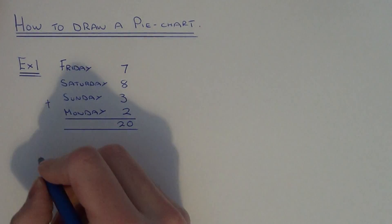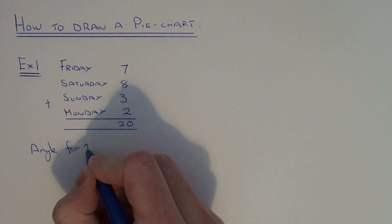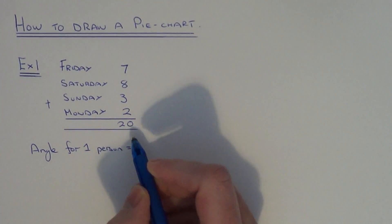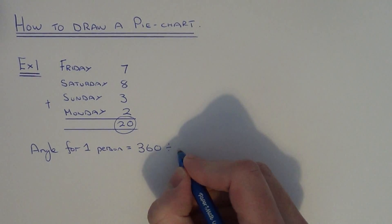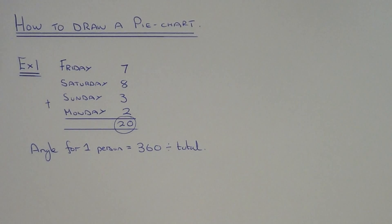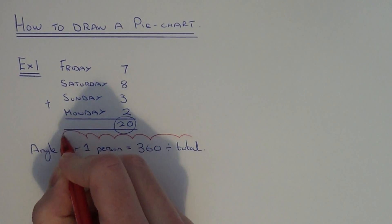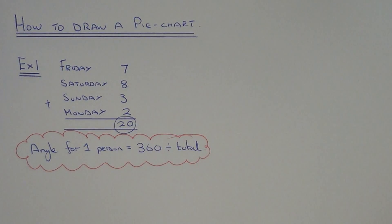Now what we are going to do is calculate the angle for one person on the pie chart. And we do this by dividing this total into 360. So this is your important formula when you have to draw a pie chart, so you need to remember this.